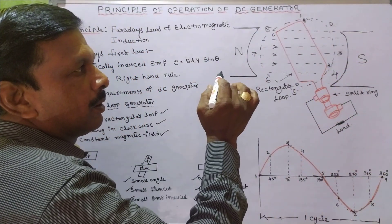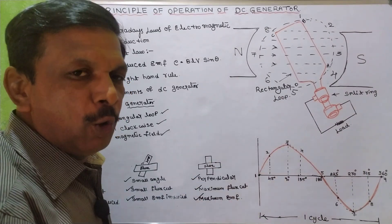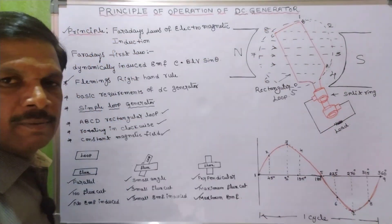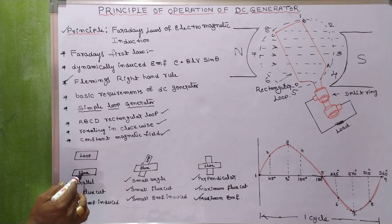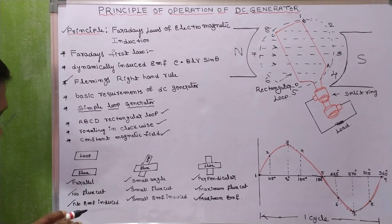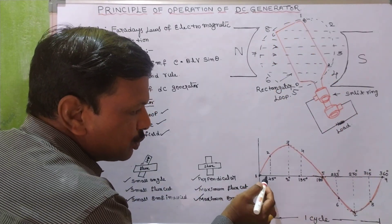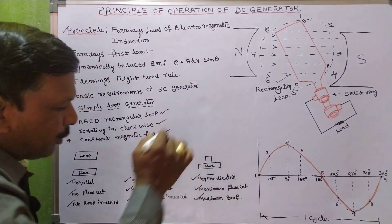In one revolution, let's see how the EMF is induced in the loop at different positions. At position number one, the loop and flux are both parallel. When both are parallel, no flux cutting takes place and no EMF is induced. So at position number one, the induced EMF is zero.